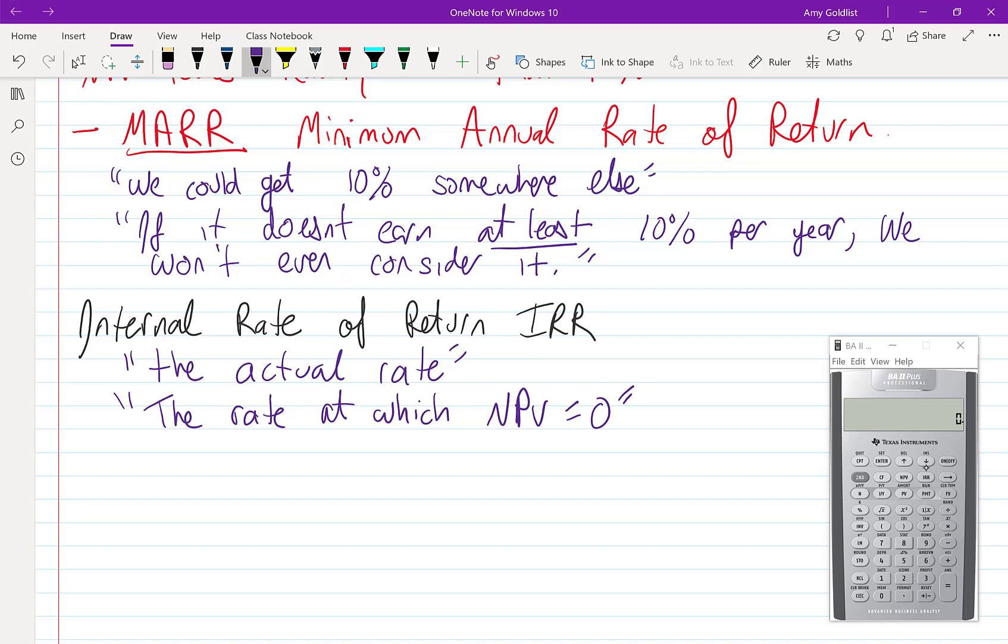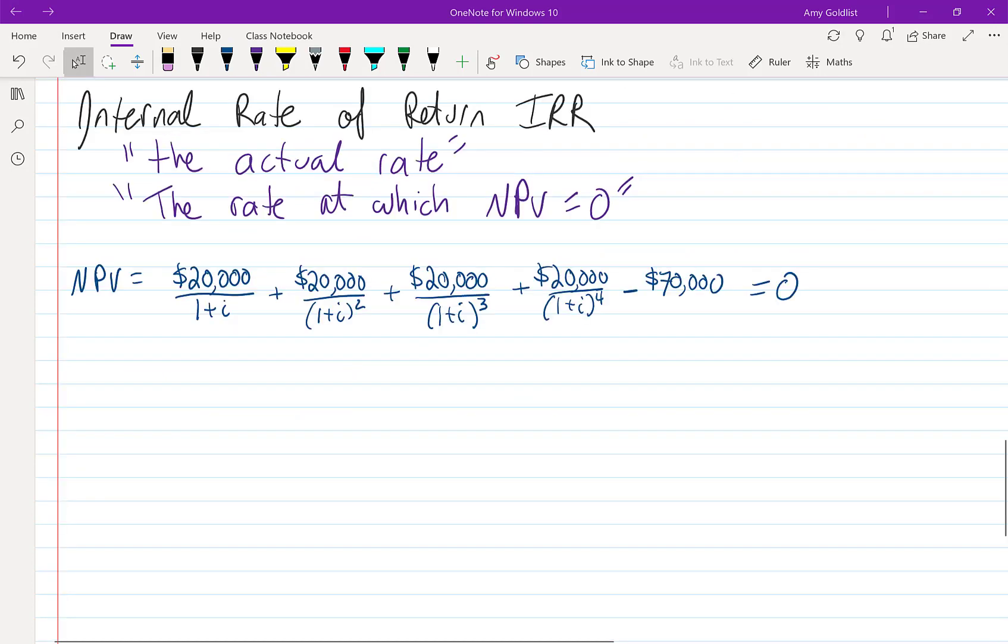So let's look at our expression. Going back to that algebra question we had before, now we have something. All of our expression, 20,000 over 1 plus i, plus 20,000 over 1 plus i squared, etc., etc., all minus 70,000 equals 0. This is a hard problem. The one I've drawn is technically solvable because it is a polynomial of degree 4 or a quartic. Once we get bigger than degree 4, and we're going to look at businesses that might last for 20 years, 100 years even. Once that n, that number of time, gets really big, this is a very hard algebra problem.